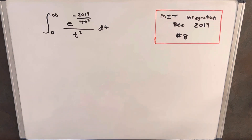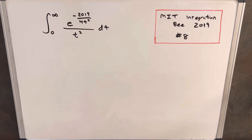Hey, I have this integral from the MIT Integration Bee 2019. This was problem number eight. So we have a complicated integral from infinity to zero, and let's see what we can do with this.